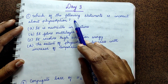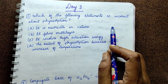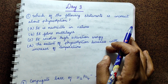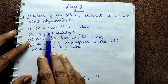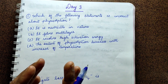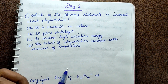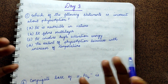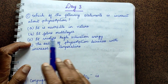Here, what they are asking is: which of the following statements is incorrect? So there are 4 statements given and we need to find which one is the incorrect statement. First statement: it is reversible in nature. So in physisorption, it involves physical attraction and weak van der Waals forces. Since the bond can be broken, it is reversible in nature — this is a correct statement.